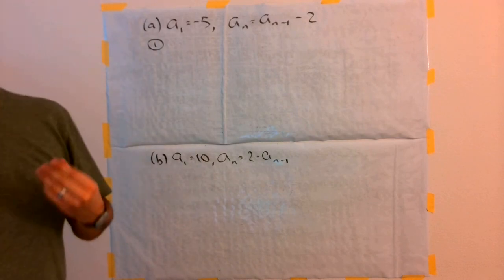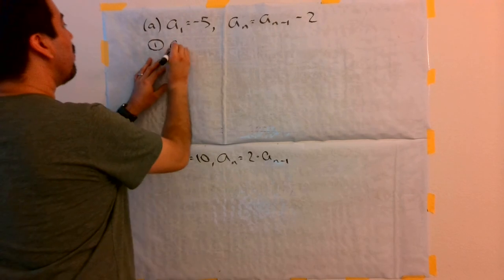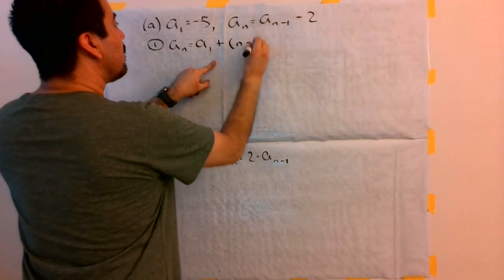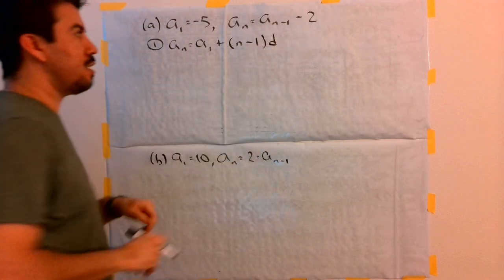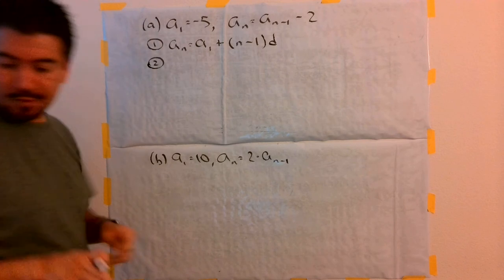We're talking about an arithmetic sequence here. And so, I'm going to write down what the explicit rule for an arithmetic sequence is. In this case, if you remember, it is a of n is equal to a1 plus, and then in parentheses, n minus 1 times d.